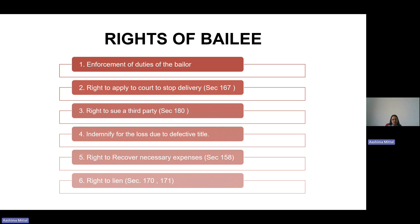The next right is the right to recover necessary expenses. Going back to the example where I kept my dog with my neighbour for one month — obviously the dog must have been fed, and there must have been various expenses for that one month because it is not easy to keep a dog. My neighbour must have incurred some expenses during that time. So his right is to recover those necessary expenses from me.